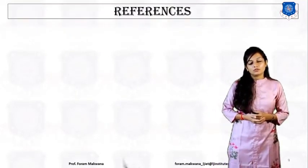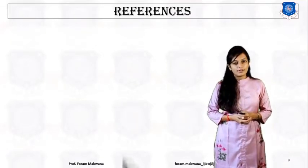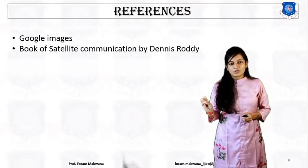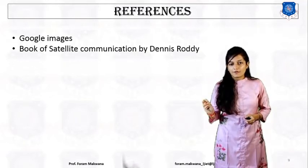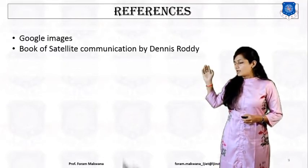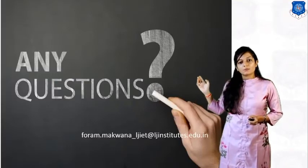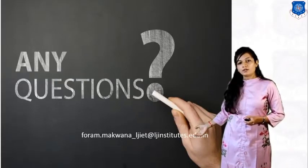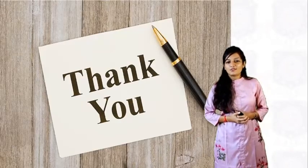Unit number 4, radio wave propagation, is now finished. We have covered the basic introduction, atmospheric loss, ionospheric effect, and rain attenuation. These are the references mentioned. If you have any questions, you can ask me anytime on my email ID. Thank you for your attention.